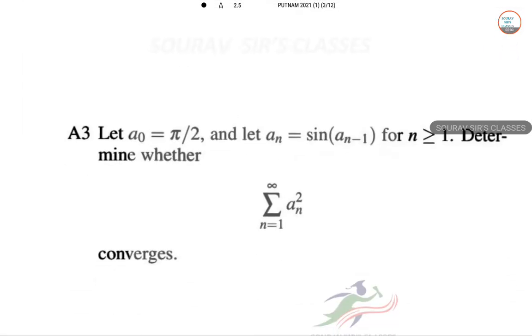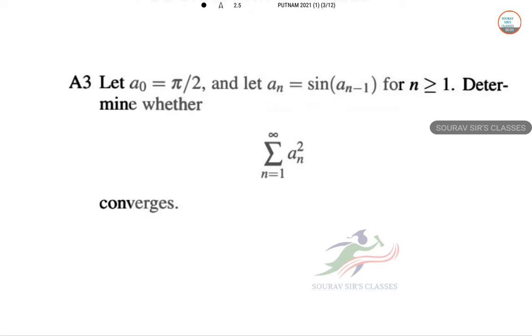Hello students, we are solving the entire paper of Putnam 21, so this is the third question. Let a_0 equal π/2 and let a_n equal sin(a_{n-1}) for n ≥ 1. Determine whether this series converges or not.